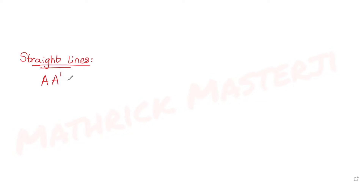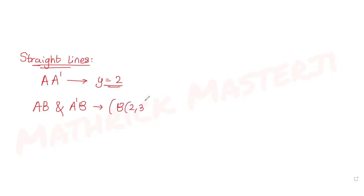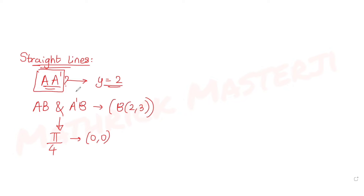The question tells us to find the distance between the two points A and A' which lie on the line y = 2, such that the two line segments AB and A'B — where B is the given point (2, 3) — both subtend an angle of π/4, that is 45 degrees, at the origin (0, 0). So we have to find what is the distance between the two points A and A'.